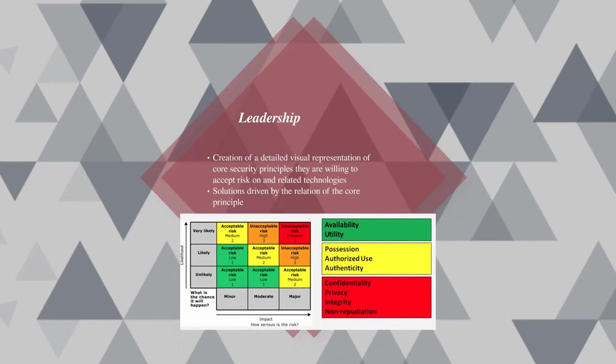Once leadership begins to employ the nine-point star in their risk management process, they can assign values from a typical risk appetite chart to the star. An organization can then list out in detail which core security principles they are willing to accept risk on and those related technologies associated with the principle. For example, if a company has a requirement that their data be highly accessible, they would seek out technologies around the availability and utility core security principles.